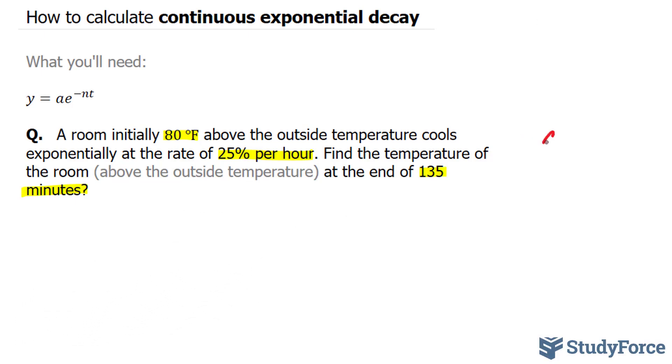So we have our initial value is equal to 80. Our rate, represented by the letter n, is 0.25 per hour. And lastly, our time is 135 minutes.